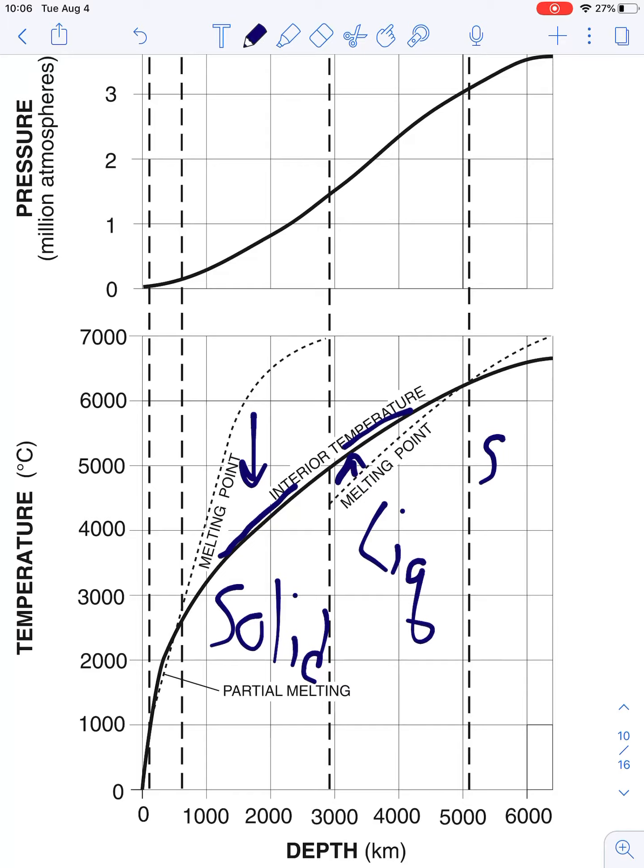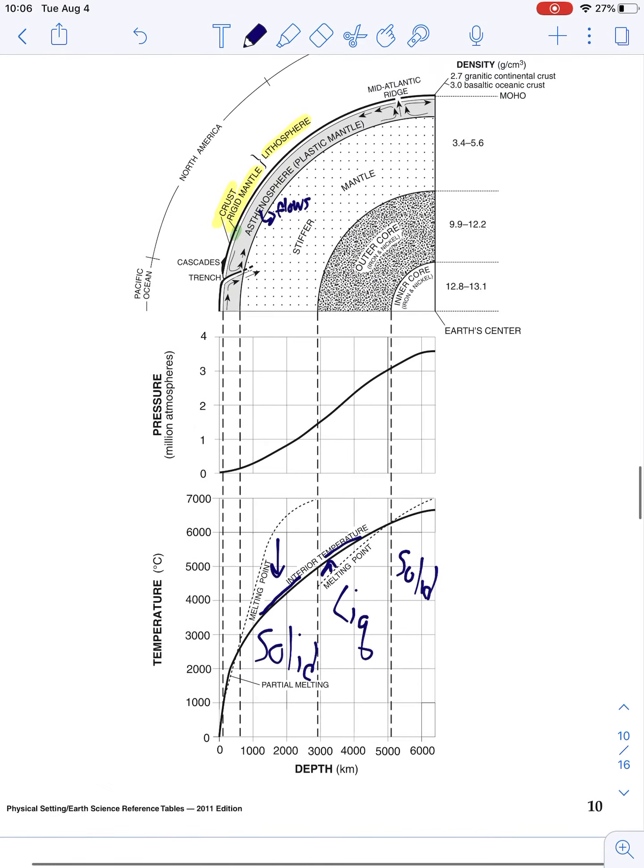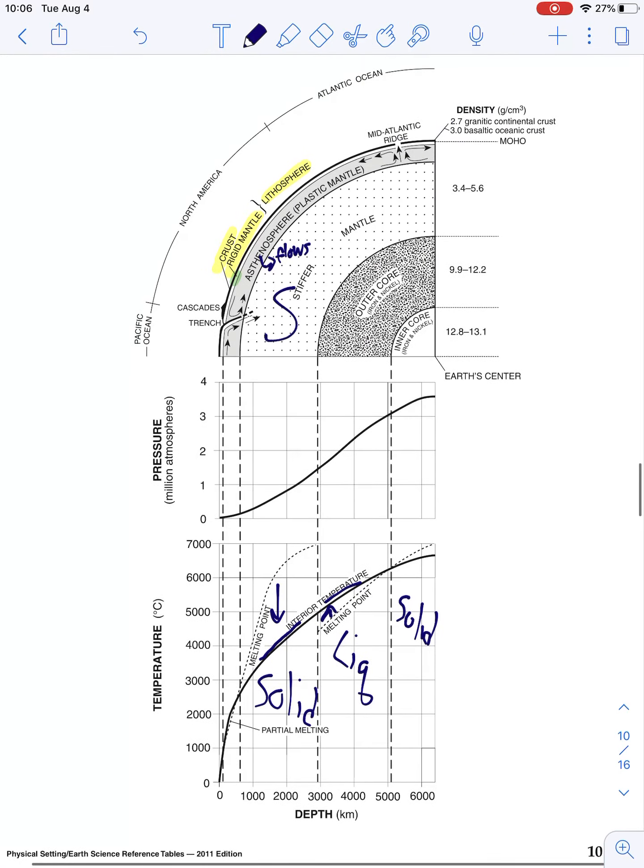So what that means is that our stiffer mantle is a solid, our outer core is a liquid, and our inner core is a solid.